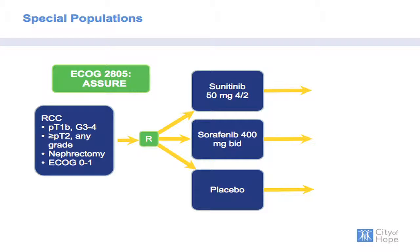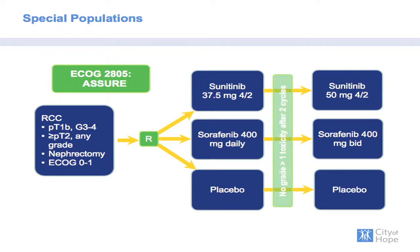The ASSURE trial is a great reminder of the relevance of toxicity in the adjuvant setting. Patients were initially randomized to sunitinib at full doses, sorafenib at full doses, or placebo. However, these doses had to be modified due to poor tolerance in the adjuvant setting — patients ultimately received sunitinib at 37.5 mg and sorafenib at half the standard dose, escalated only if they didn't incur toxicity after two cycles.